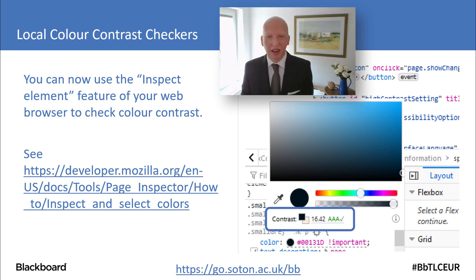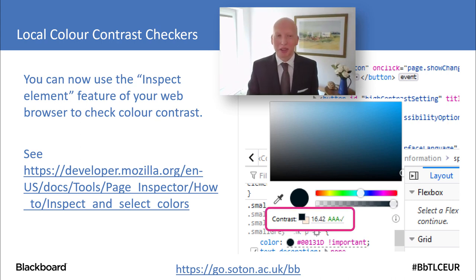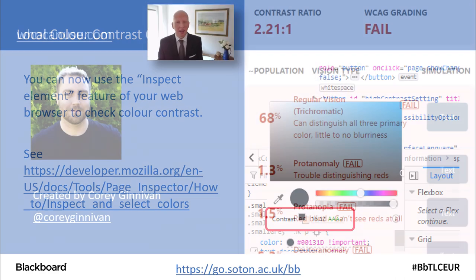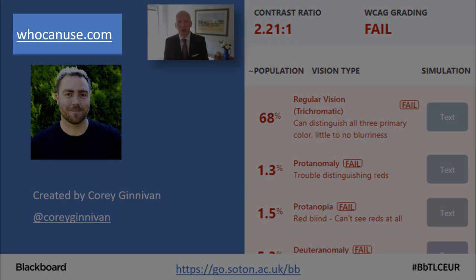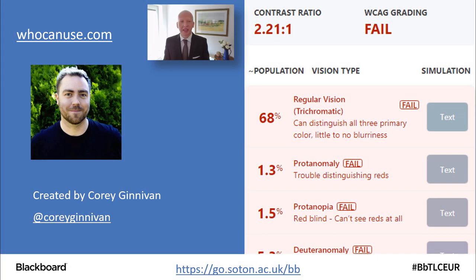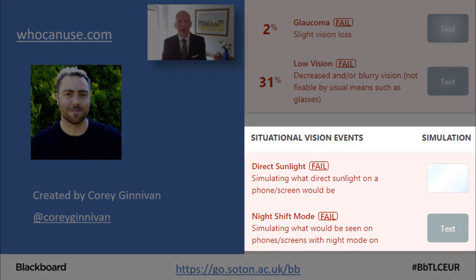Since last year, in both Firefox and Chrome you'll find that within Inspect Element it will also tell you — sometimes, not always — the contrast ratio of two colours, which can be particularly useful when you're customising your theme. My favourite colour contrast checker is called whocanuse.com, created by Corey Ginevan in Perth, Australia. Not only does it tell you the contrast ratio and whether it passes or fails the WCAG standard, it also explains how that colour contrast would look if you have different vision impairments, and it has some examples of situational impairments like direct sunlight.